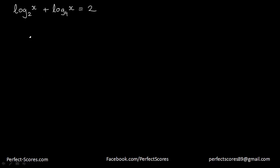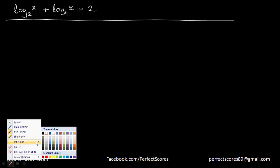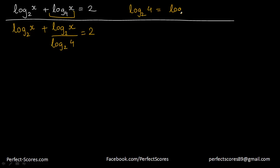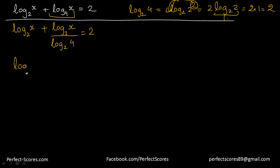Let's solve one more question. We have log of x to the base 2 plus log of x to the base 4 equals 2. I'll change the base of the second term to 2: that becomes log of x divided by log of 4 to the base 2. Now log of 4 to the base 2 equals log base 2 of 2 squared, which equals 2 times log base 2 of 2, which is 2 times 1 equals 2. So this becomes log x base 2 plus log x base 2 times one-half equals 2.